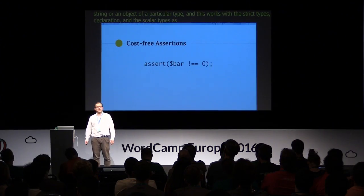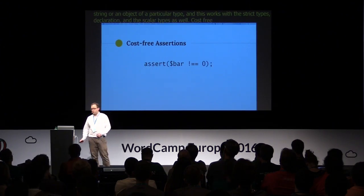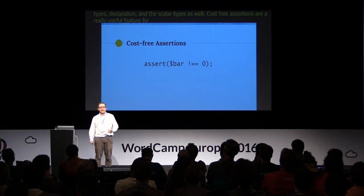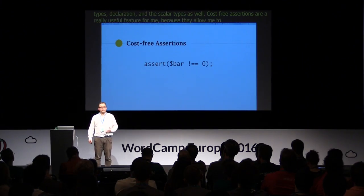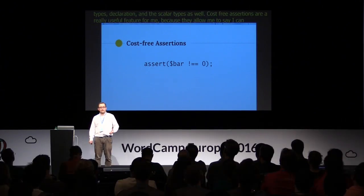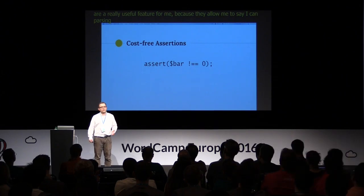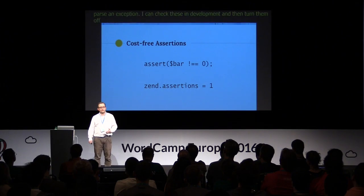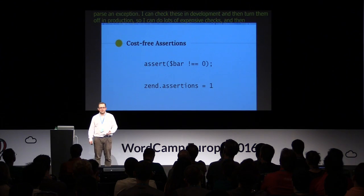Cost-free assertions are a really useful feature because they let you pass an expression that evaluates to true or false, and if it evaluates to false, it throws an exception. What's really useful is that you can check these in development and then turn them off in production, so you can do lots of expensive checks without any impact on the runtime in production.